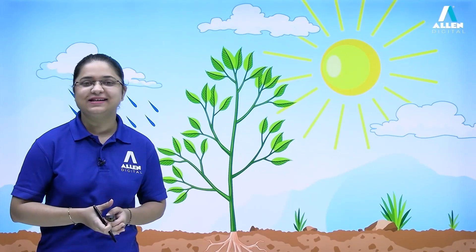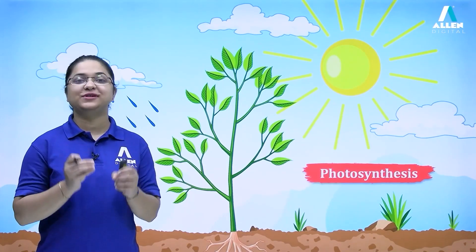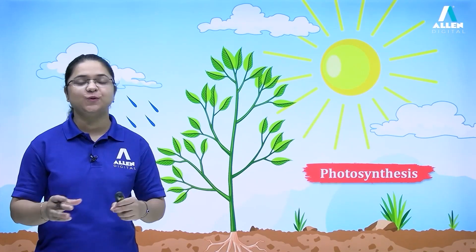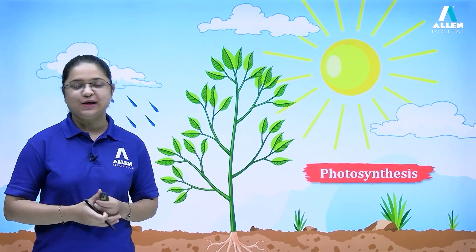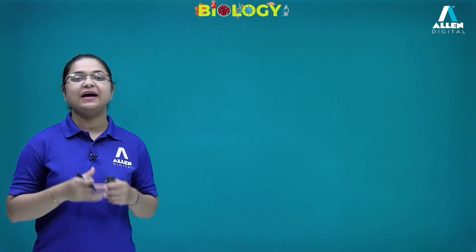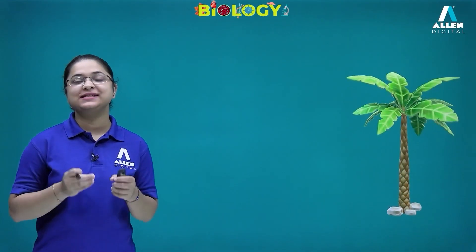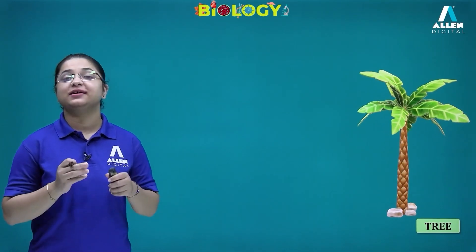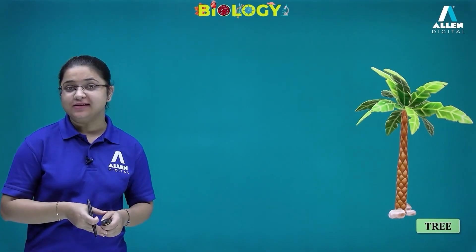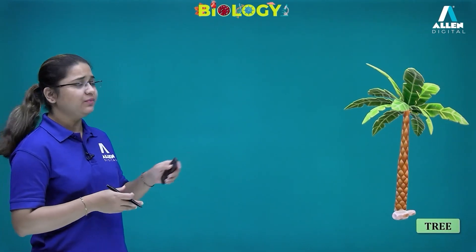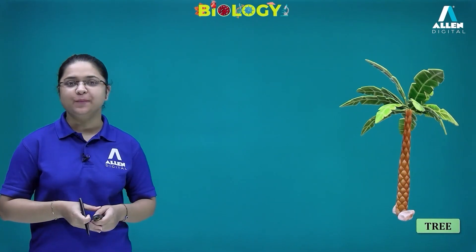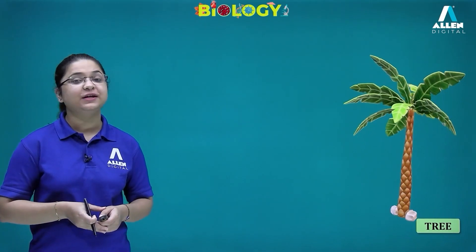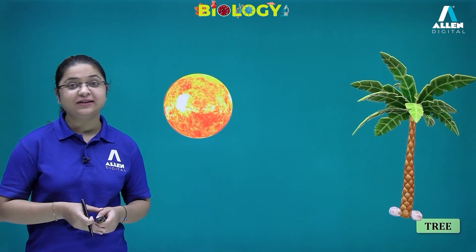Hello students, in this section we are going to learn about the process of photosynthesis. We all know that photosynthesis is a process by which green plants — like for example, we see a tree here — they depend on the sun.